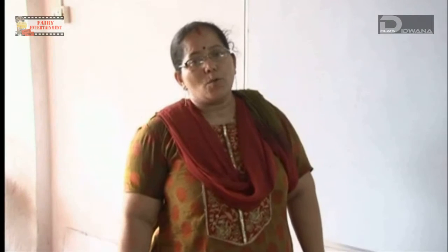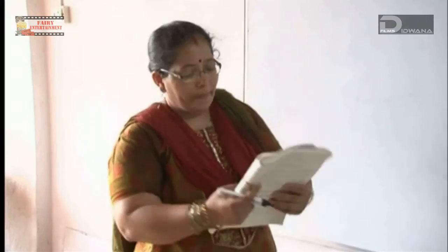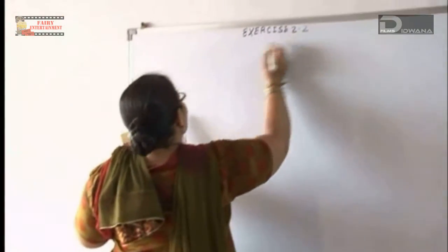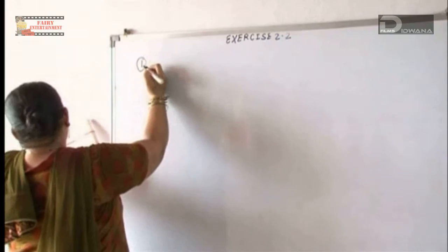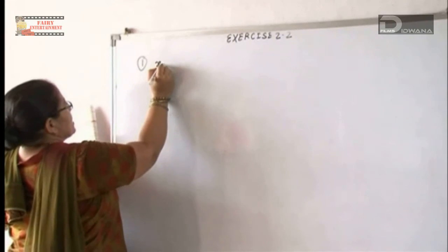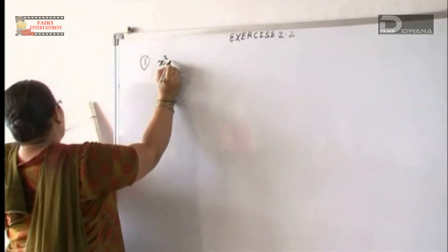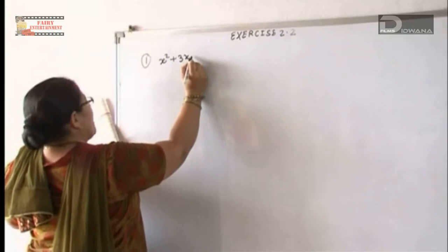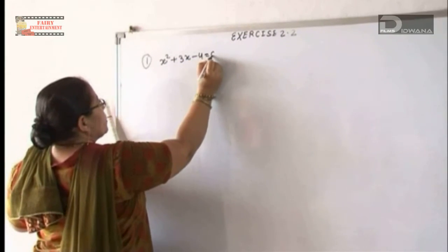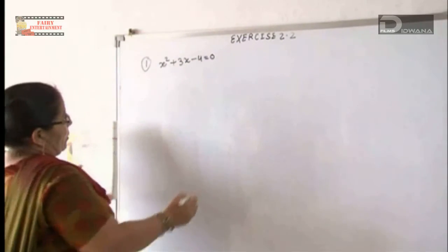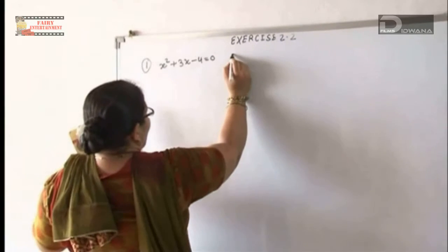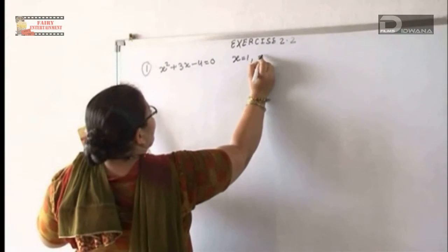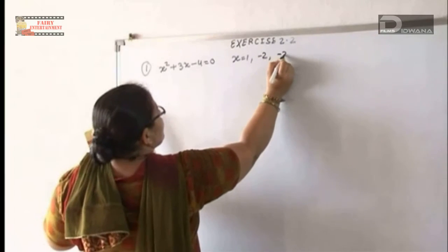We start with exercise 2.2, question number 1. The question is x squared plus 3x minus 4 equals 0. We have to put the x value. The x values given are 1, minus 2, or minus 3.